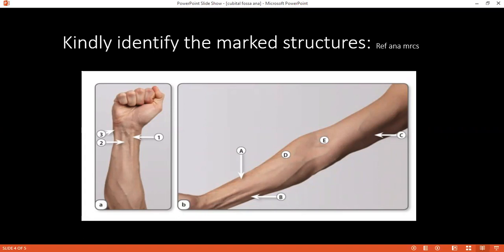And also posterior compartment is divided into superficial and deep compartment. Superficial muscles of anterior forearm are flexor digitorum superficialis, palmaris longus, pronator teres, flexor carpi radialis, and flexor carpi ulnaris. Okay. The deep muscles are pronator quadratus. Yes. And flexor pollicis longus and flexor digitorum profundus. Yes. Good.